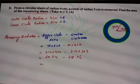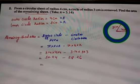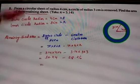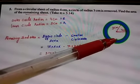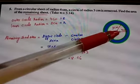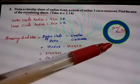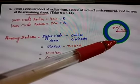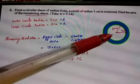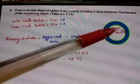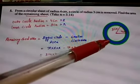Question 5: From a circular sheet of radius 4 centimeters, a circle of radius 3 centimeters is removed. Find the area of the remaining sheet. The remaining area equals the bigger circle area minus the smaller circle area. The bigger circle has radius R = 4 cm and the inner circle has radius r = 3 cm. Remaining area = πR² minus πr².